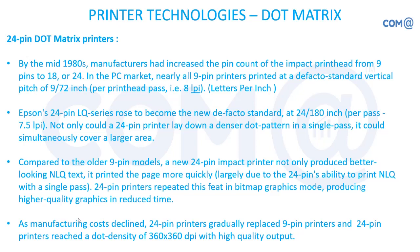Obviously 24-pin impact printers give higher quality, but cost is more compared to nine-pin printers. They are less used in the industry. Normally bigger corporate companies use 24-pin printers for better quality, while middle or lower level organizations still use nine-pin printers. Later, costs were reduced and people gradually started buying 24-pin printers, which were at peak in the market. They also achieve a ratio of 360 by 360 dots per inch with good quality output.